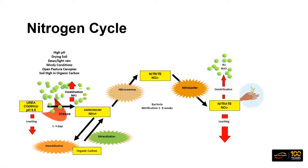Losses can be significant — up to a maximum of around 30% in pasture systems. Where we've got higher pH soils, drying soil, or light misty rain, you're getting hydrolysis but not enough moisture to move that urea granule into the soil to protect it. Windy conditions can drive that gas off the pasture. After a silage cut with open canopy and not much residual leaf area, a lot of that gas can be pushed off. In pasture systems, high organic carbon drives urease activity much quicker than in cropping systems.